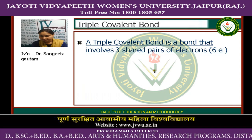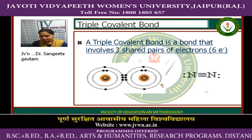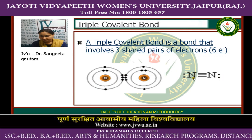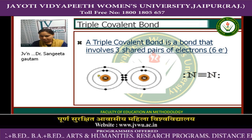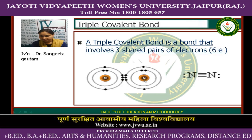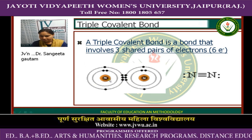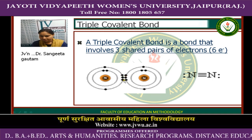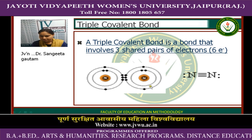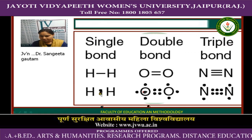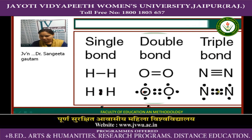A triple covalent bond is a bond that involves three shared pairs of electrons, meaning a total of six electrons between atoms. The example is nitrogen (N₂), where one nitrogen atom shares three electrons and another nitrogen atom also shares three electrons, for a total of six shared electrons, forming a triple bond. To summarize: a single bond means two electrons between two atoms, a double bond means four electrons, and a triple bond means six electrons between two atoms.